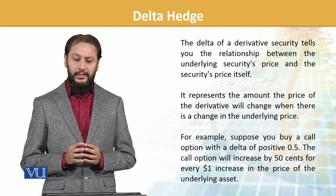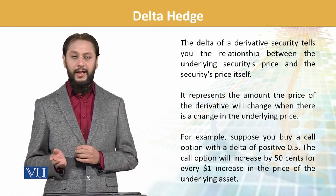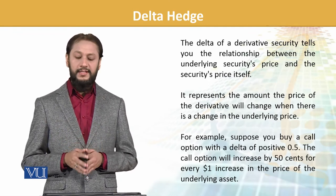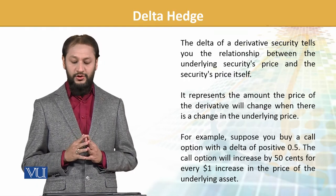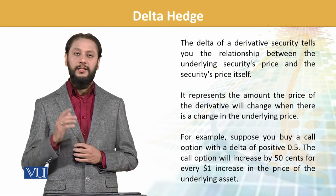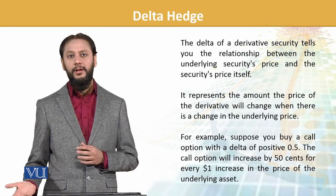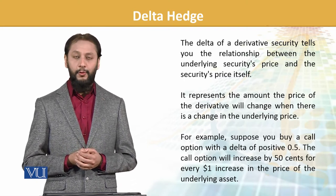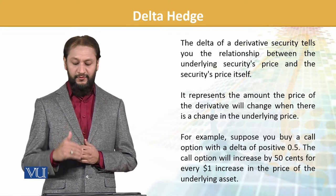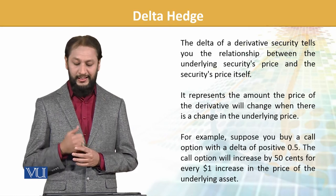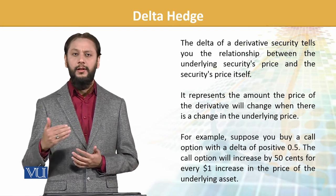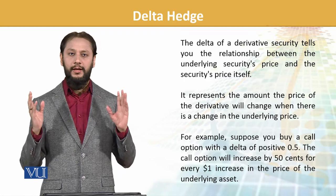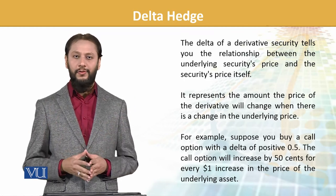The delta of a derivative security tells you the relationship between the underlying security and the derivative's price — what linkage exists between them. It represents the amount the price of the derivative will change when there is a change in the underlying price. For example, if you buy a call option with a delta of positive 0.5, the call option will increase by 50 cents for every one-dollar increase in price. Make sure you have a thorough grasp of this area, as exam questions can come from any angle.